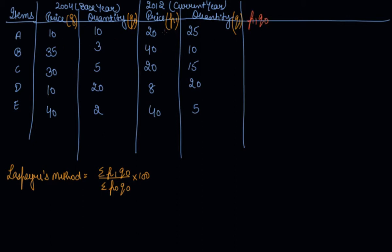Let's find out P1 into Q0. This is your P1 and this is your Q0. So: 20 into 10 is 200; 40 into 3 is 120; then 100; 160; and 80. The aggregate sum of P1Q0 is 660.